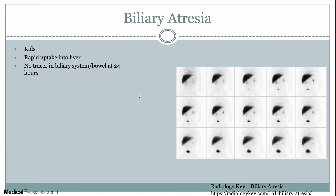The next example is biliary atresia. This is really only encountered in kids, but if you're a pediatrician, what you'll see is rapid, intense uptake within the liver very early on, but nothing else. What appear to be the kidneys show renal excretion in the kidneys and bladder. However, there's no biliary uptake, no uptake in the small bowel, and no uptake in the gallbladder — essentially because the patient doesn't have bile ducts. That's biliary atresia.